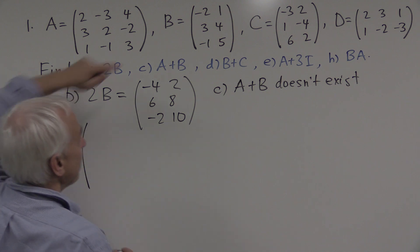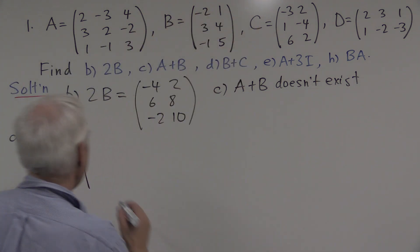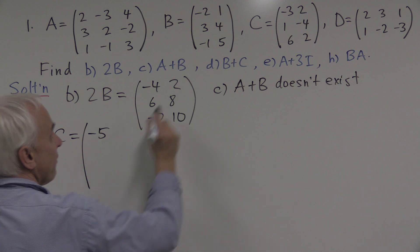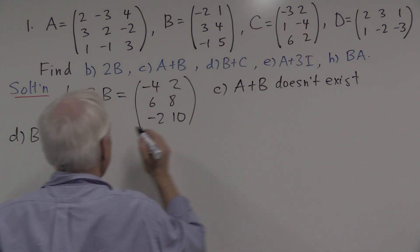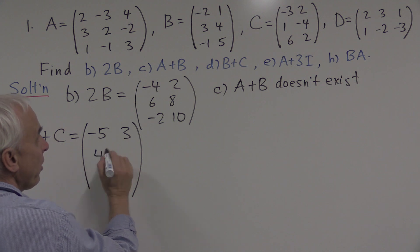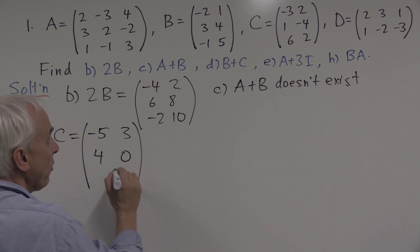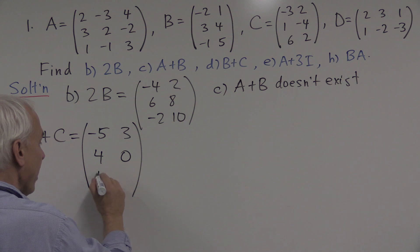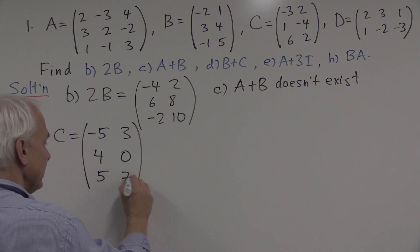So the minus 2 and the minus 3 are added to give us minus 5. 1 plus 2 in the corner there is 3. And carrying on, 3 plus 1 is 4. 4 plus minus 4 is 0. Minus 1 plus 6 is 5. And 5 plus 2 is 7. There's B plus C.